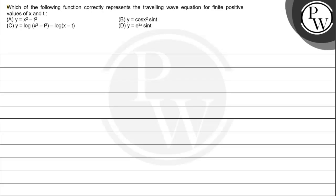Let's read the question: which of the following functions correctly represents the traveling wave equation for finite positive values of x and t? Option A: y is equal to x squared minus t squared. Option B: y is equal to cos(x squared) sine(t). Option C: y is equal to log(x squared minus t squared) minus log(x minus t).